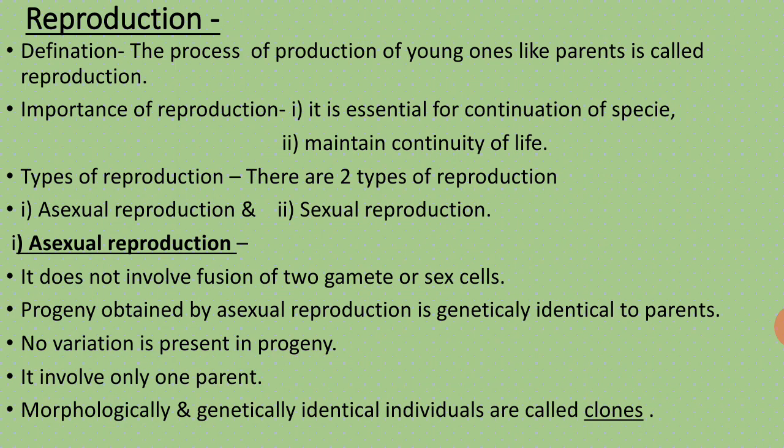Asexual reproduction does not involve fusion of two gametes or sex cells. In this asexual method, gametogenesis does not occur — gametes are not produced and fusion of gametes does not occur. There is no gametogenesis and no fertilization. The progeny obtained by asexual reproduction is genetically identical to the parents. Progeny means the new individual.